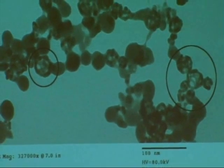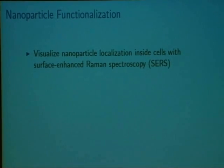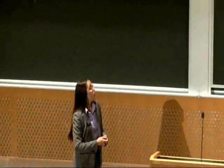Now, what are we going to do with them? We want to track their location inside cells using something called surface-enhanced Raman spectroscopy, or SERS. SERS is based on traditional Raman spectroscopy, which is a type of vibrational spectroscopy that measures the amount of Raman scattered light coming off a sample. When you shine light on a thin sample, a small percentage will be scattered, and a small percentage of that scattered light will be scattered inelastically — meaning the wavelength of the scattered light differs from the incident light.